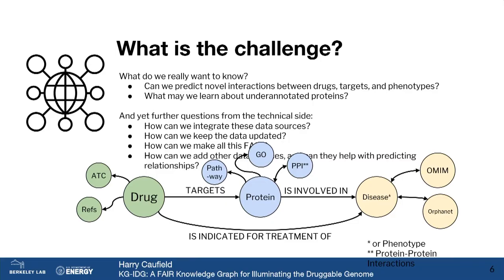This gets more complicated when we start mixing in other data to complement our drug and target relationships in a knowledge graph. For drugs, that could be references to literature or ATC categories. For proteins, that's things like the pathways they're involved in, GO categories, and even protein-protein interactions. For diseases or phenotypes, that's linking to things like OMIM or Orphanet. And in fact, these are all things that are contained within KGIDG.